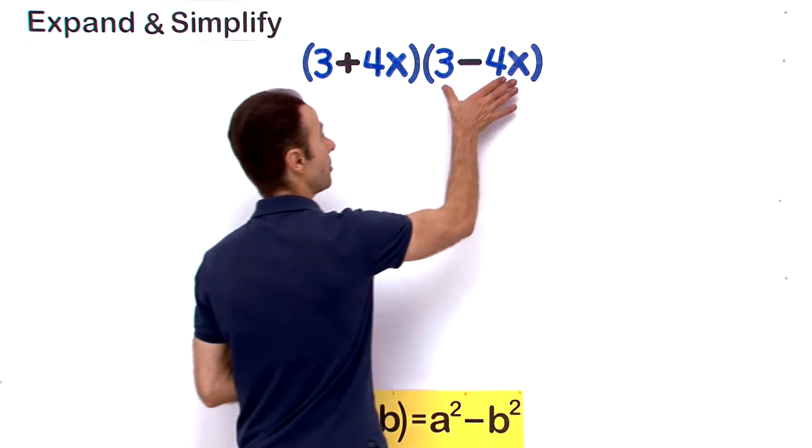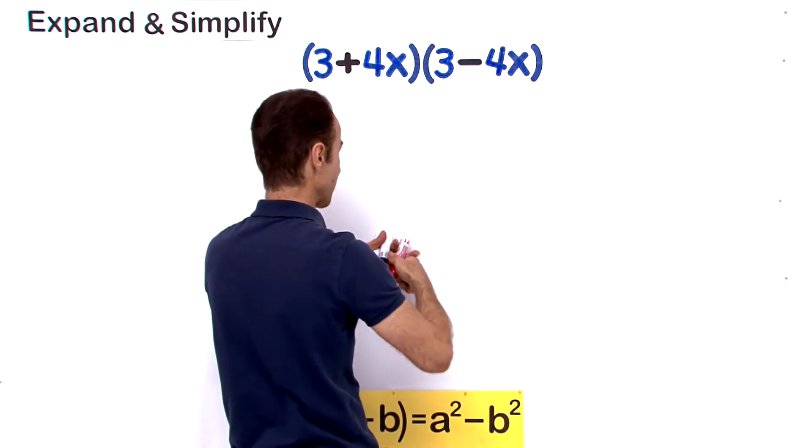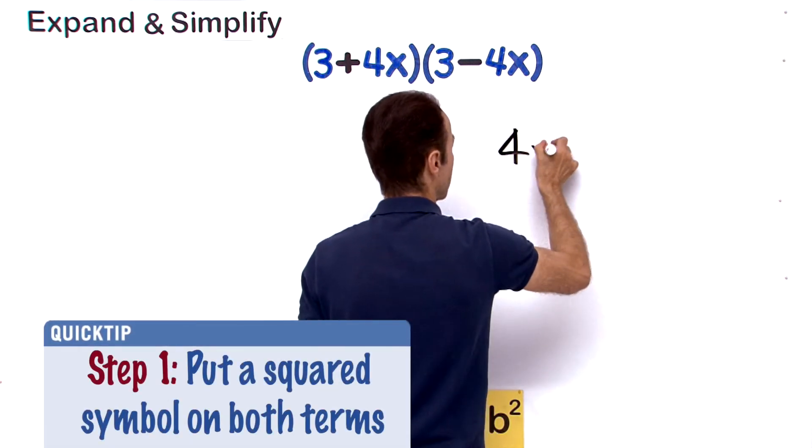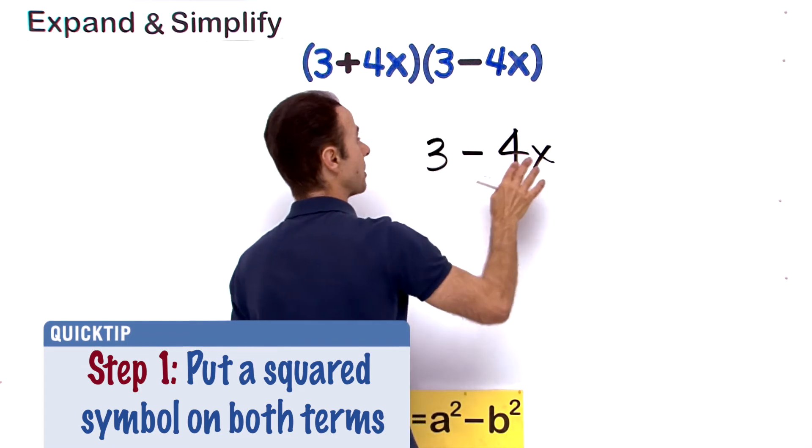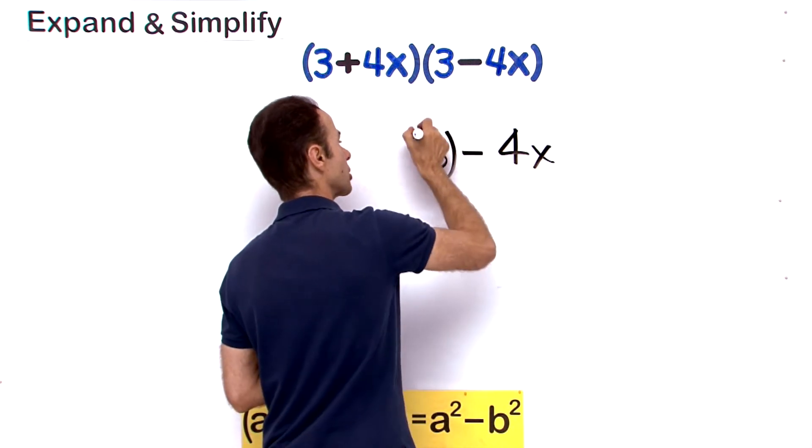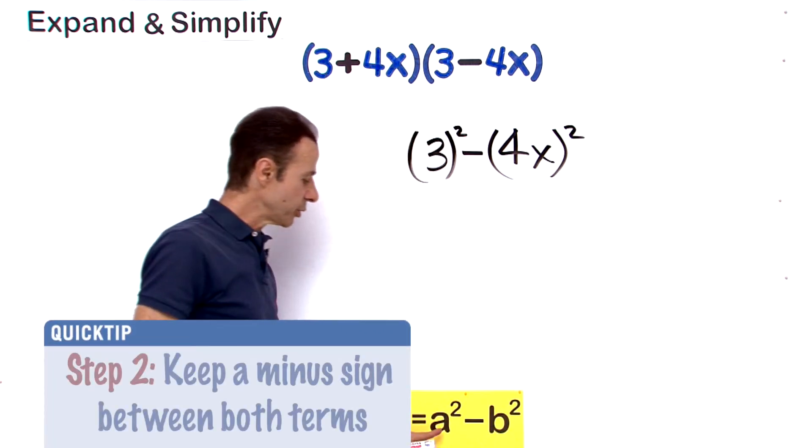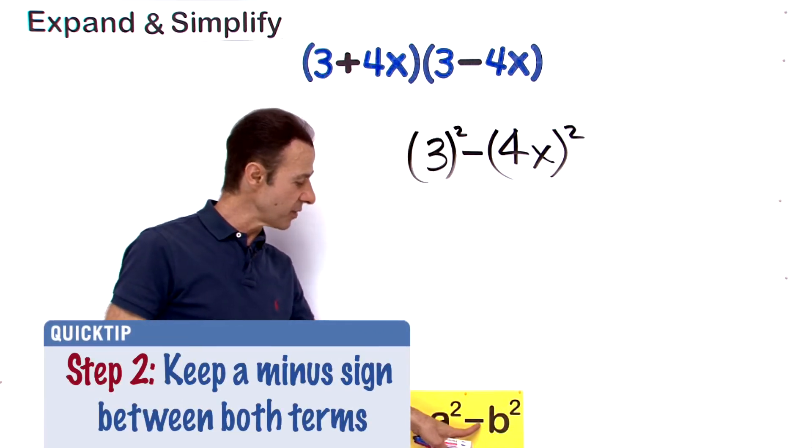So what I like to do is take the first term and just rewrite it as it is, so that becomes a 3. Bring down the 4x, bring down the minus, except each one we are going to square it. So I square this one and I square that one. That's exactly what we are doing here: a squared, b squared, and there is a minus in between.